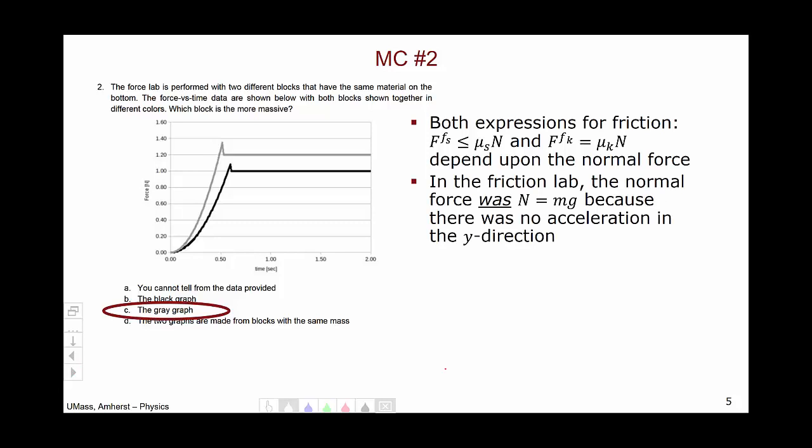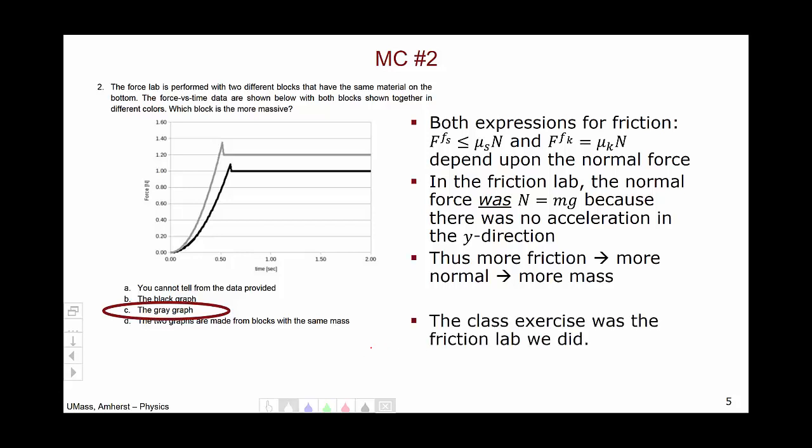In the friction lab done in class, the normal force was equal to mg because there was no acceleration in the y direction. Therefore, more friction implies a higher normal force, which implies more mass. The gray curve clearly has higher friction throughout and therefore more mass. The relevant class exercise was the friction lab.